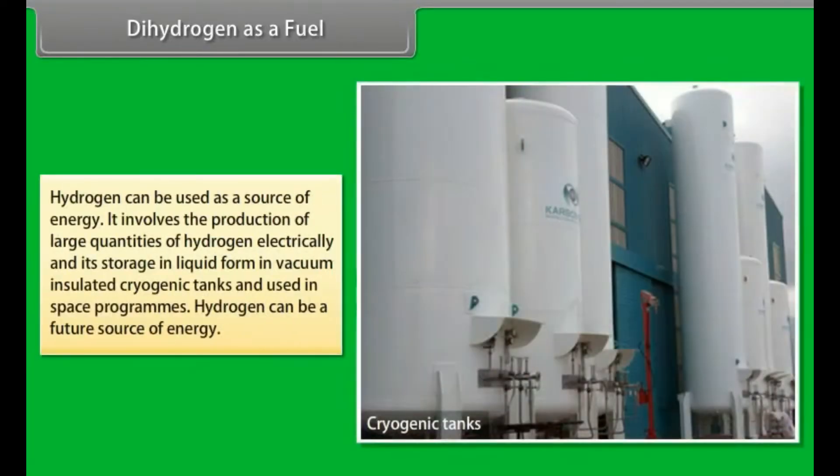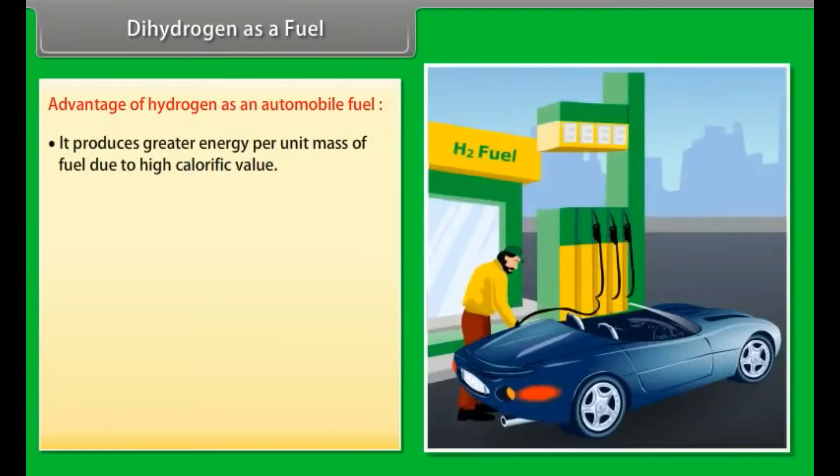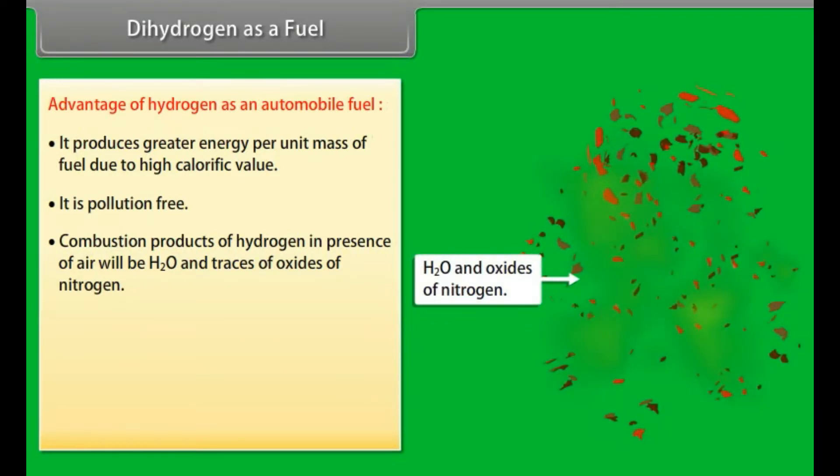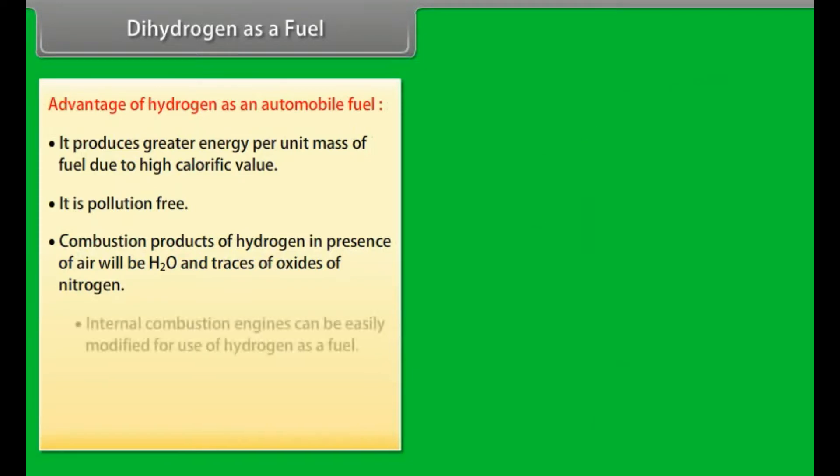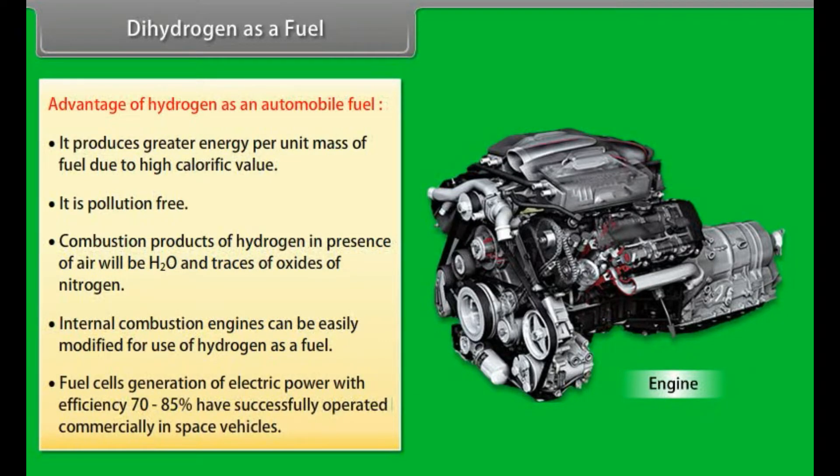Dihydrogen as a fuel: Hydrogen can be used as a source of energy. It involves the production of large quantities of hydrogen electrically and its storage in liquid form in vacuum insulated cryogenic tanks and used in space programs. Advantages: It produces greater energy per unit mass due to high calorific value. It is pollution-free. Combustion products in presence of air will be H2O and traces of oxides of nitrogen. Internal combustion engines can be easily modified for hydrogen fuel. Fuel cells generate electric power with efficiency 70-85% and have successfully operated commercially in space vehicles.